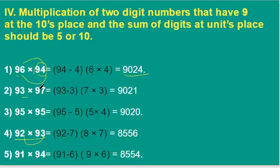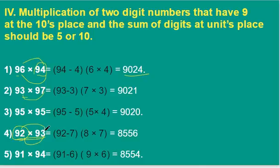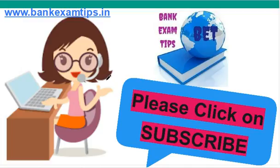93 minus 3 gives 90, and multiply the end numbers: 7 into 3 is 21, so the answer is 9021. For numbers which have 9 at the units and tens place where the sum of the end numbers is not 10, take the smaller number — for example 92 — and deduct: 100 minus 92 is 8 and 100 minus 93 is 7, so multiply these: 8 into 7 is 56. Therefore our answer is 8556. Follow the above method for similar problems.